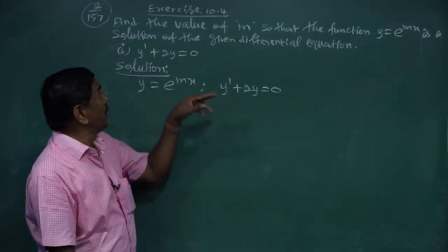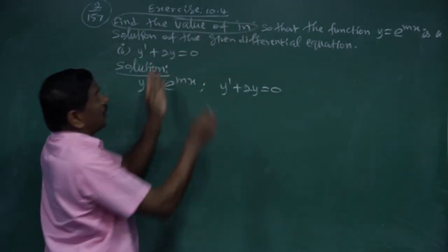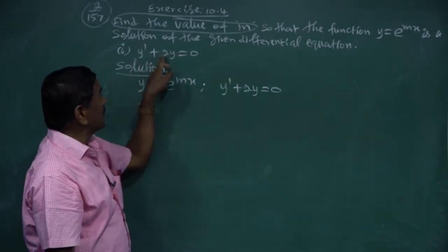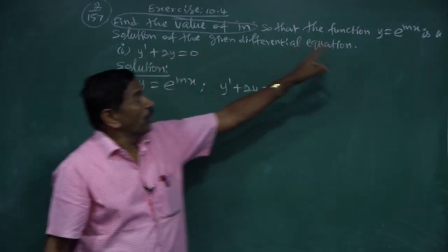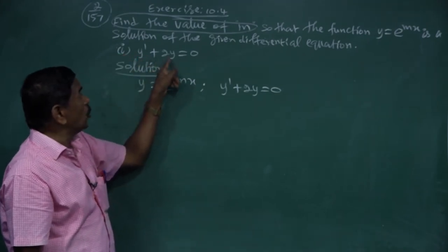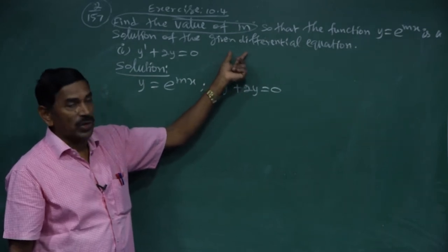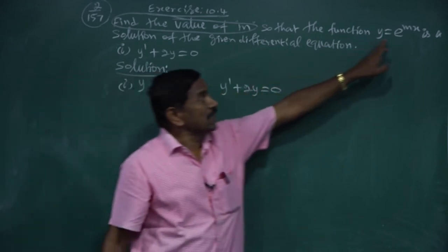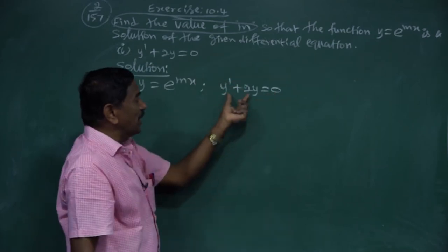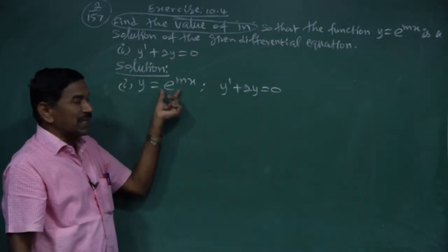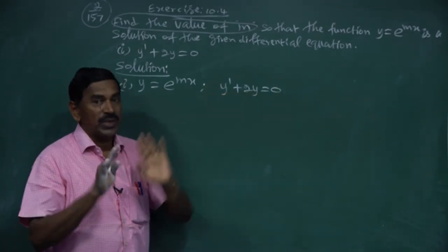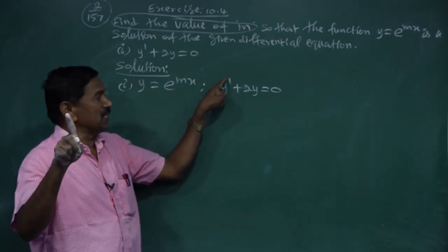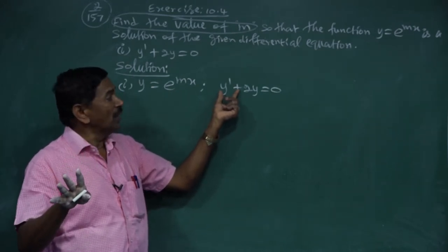Now, second question from exercise 10.4: find the value of m so that the function y = e^(mx) is a solution of the differential equation y' + 2y = 0. The answer involves y', so we need one-time differentiation. We want to differentiate once and find m.